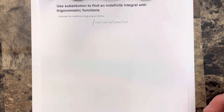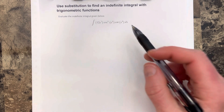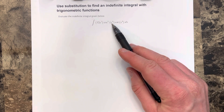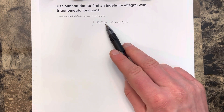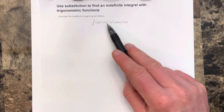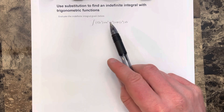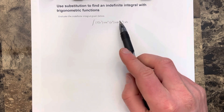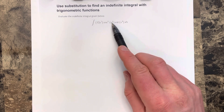Like the previous video, it's hard sometimes to figure out what to set u equal to. If I set u equal to x to the fourth, I would cancel that piece out, but I'd still have two different trig functions after taking the derivative and resubstituting. So I probably want to use one of these trig functions.